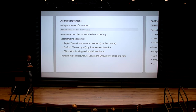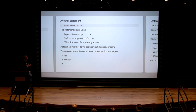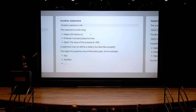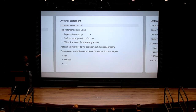Let's start with: 'Charles Darwin was born in Shrewsbury.' Simple statement — we have a subject which is Charles Darwin, a verb which is 'born in,' and an object which is the city Shrewsbury. I can have another kind of statement: 'Shrewsbury has a population of 6,000.' Again we have a subject, a predicate, but now the difference is the object is a property — a value — rather than another entity in the system.